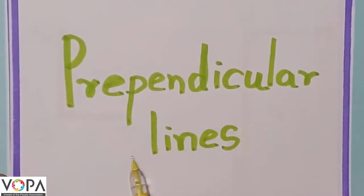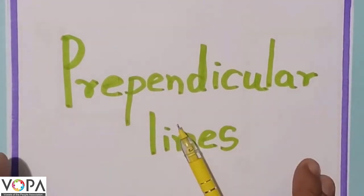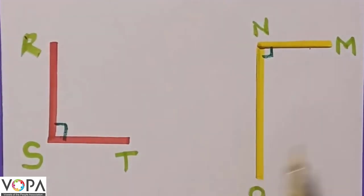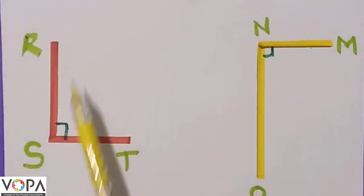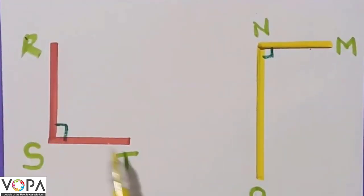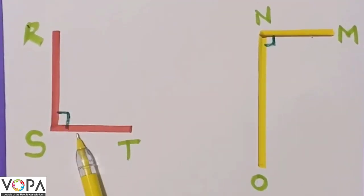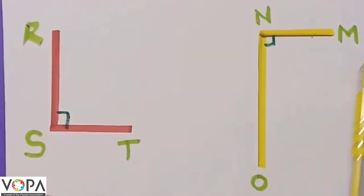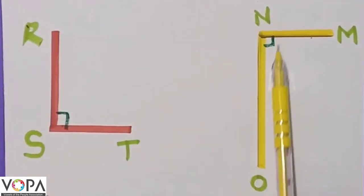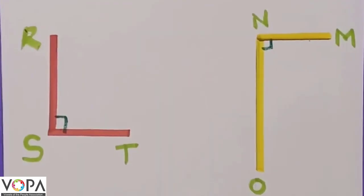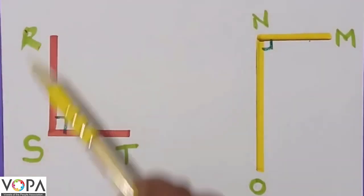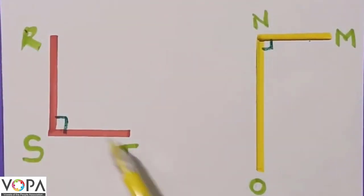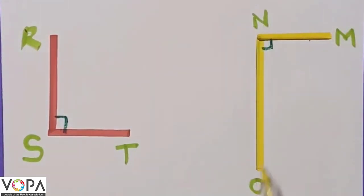Okay, now we are going to learn perpendicular lines. Look at these lines. Angle RST is 90 degrees, and also angle NNO is also 90 degrees. When two lines — line SR or ST — make a 90-degree angle, and line MN and line NO also make a 90-degree angle...